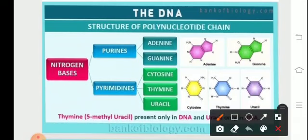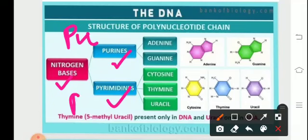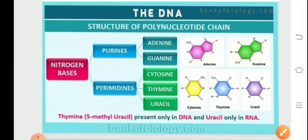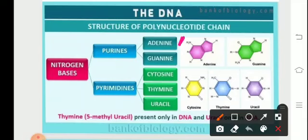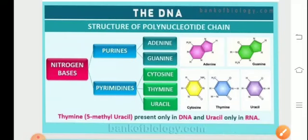Now let us discuss the nitrogenous bases — the nitrogen-containing basic compounds. There are two types: purines (PU) and pyrimidines (PY). The purines are adenine and guanine, represented as A and G. The pyrimidines are cytosine (C), thymine (T), and uracil (U) — uracil is present instead of thymine in the case of RNA.